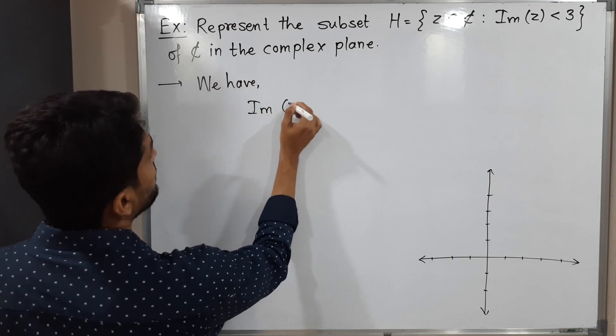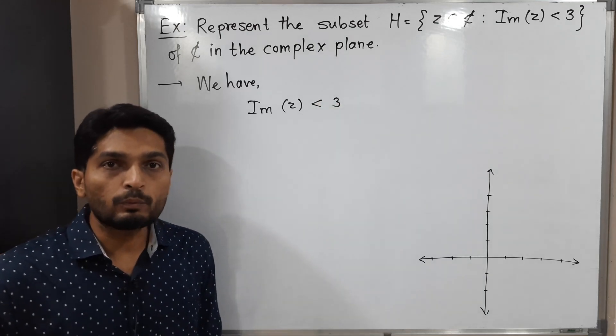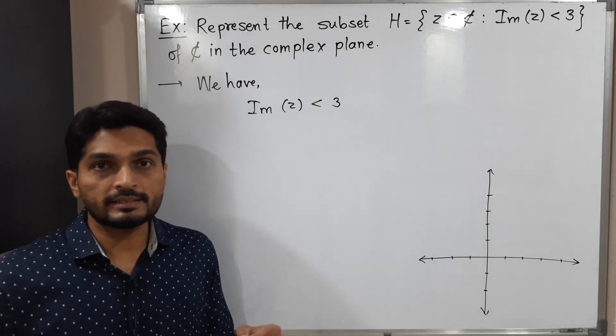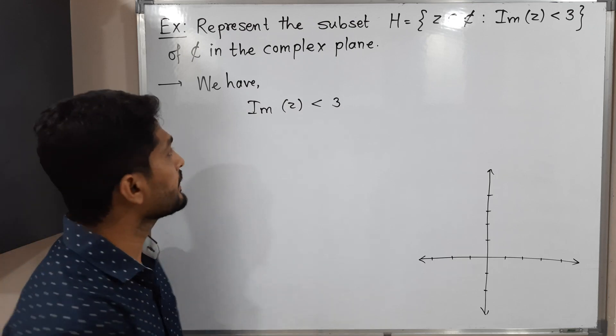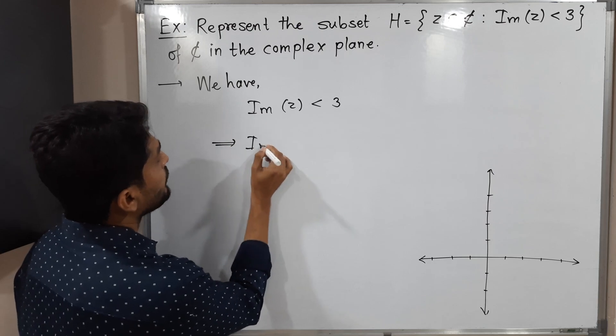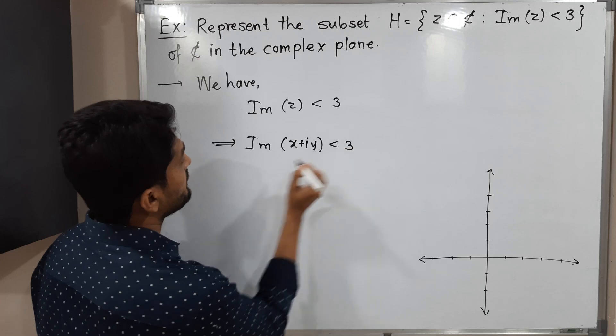Imaginary part of z is less than 3. So normally what we do is replace z by its Cartesian form, that is x plus iy. So let us replace z by x plus iy. So imaginary part of x plus iy less than 3.